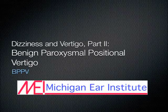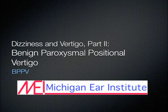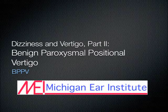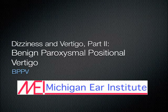BPPV is the most common cause of vertigo. The vertigo it causes is a sensation of rotation in space when your head is in certain positions. Typically these positions include laying down to go to sleep, rolling in bed, and sitting up and bending down. The vertigo of BPPV is brief, lasting less than a minute, for reasons that will be discussed in this video.